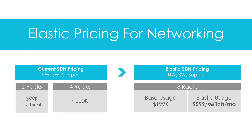Once a customer is leveraging additional capacity beyond 4 racks or beyond 10 switches, they would incur a monthly charge on a usage basis for $5.99 a switch per month. It is a combination of a model where a customer pays for average use and sustained use, but peak capacity is on-premise to be consumed on an on-demand basis.